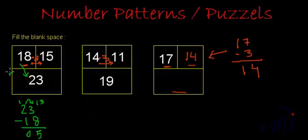That means if we add 5 to 18, we get 23. Now let's check if we are getting 19. 4 plus 5 is 9 and 1. Yes, we are getting 19 by adding 5 to 14.